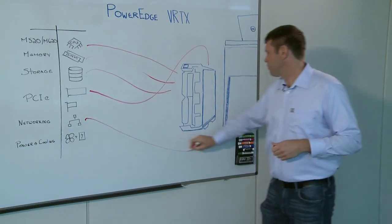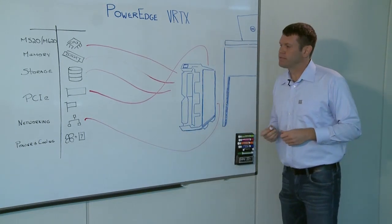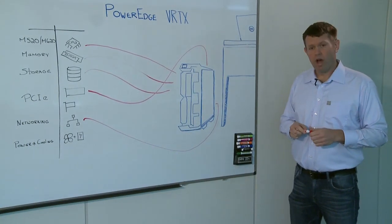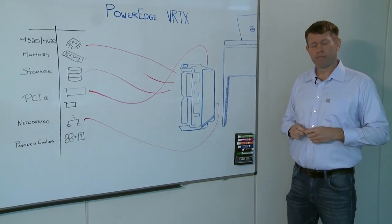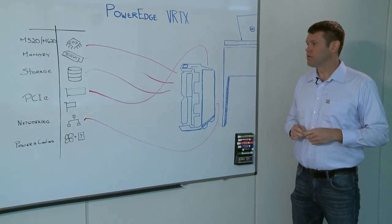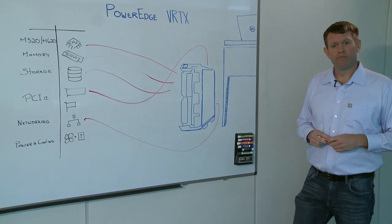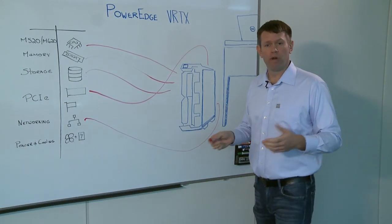The networking for Vertex comes in two options. We offer a one gigabit ethernet switch. We also offer a one gigabit pass-through if you already have networking gear that you employ in your environment.